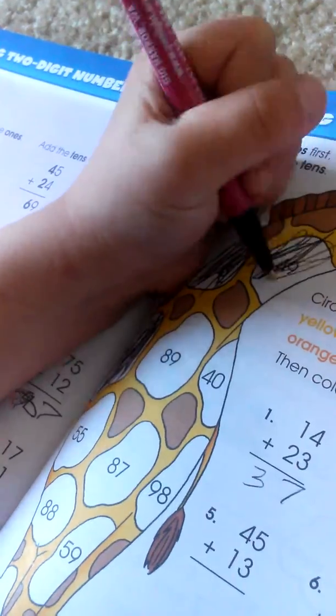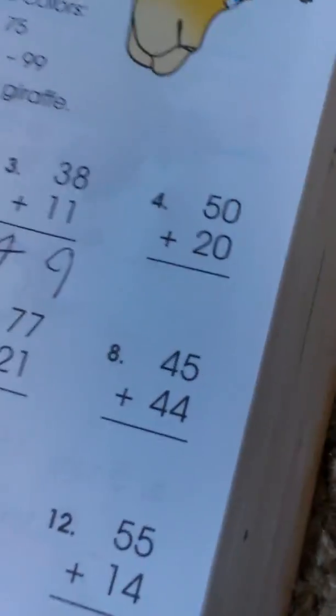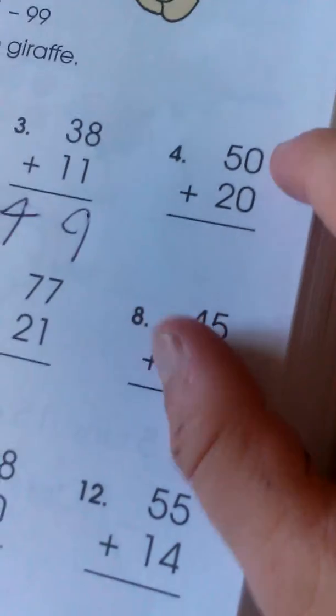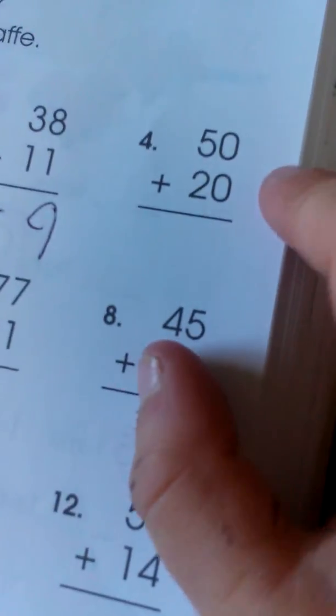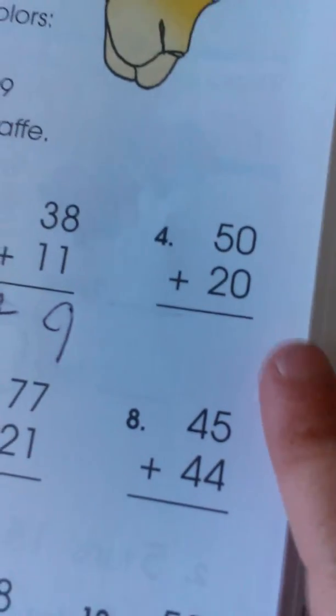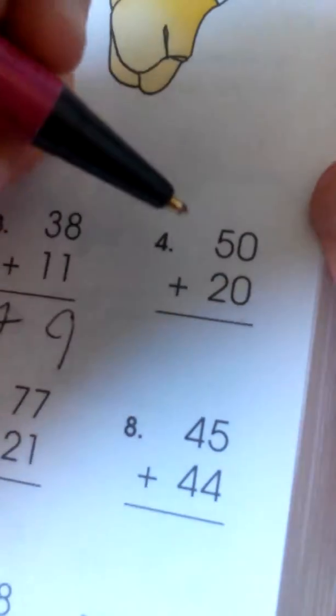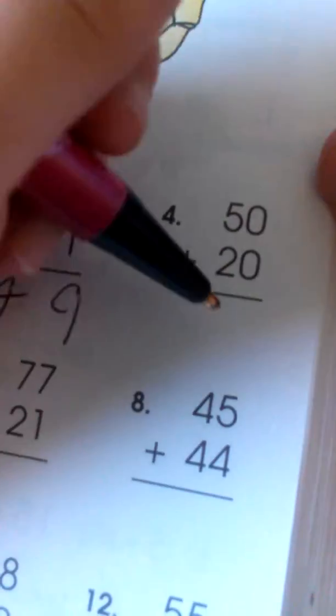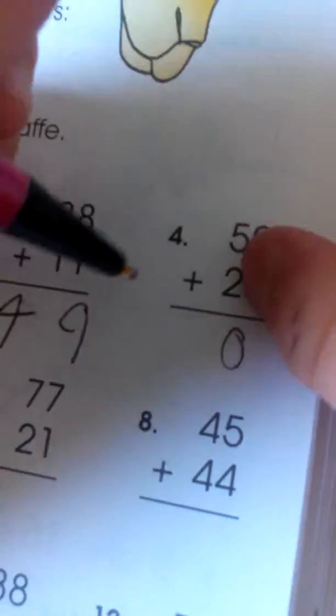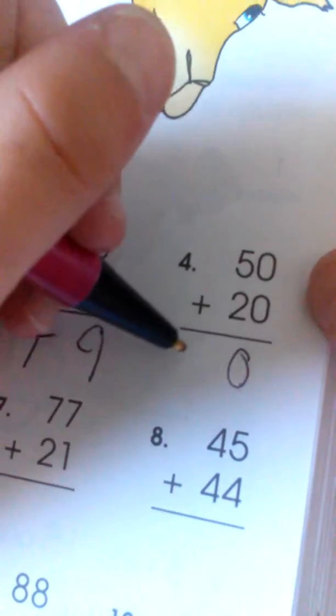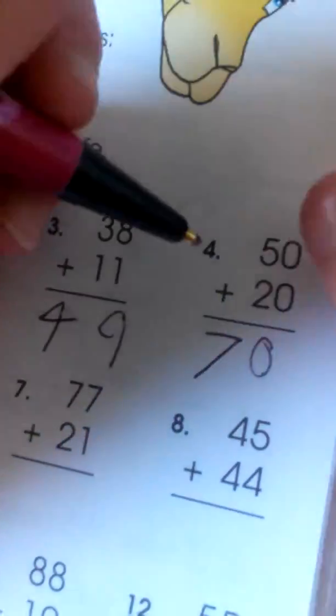I'll do 50 plus 20. I've done something plus 20 but this one is kind of the same as that one. 50 plus 20. 0 plus 0 is 0 and 5 plus 2 is 7, so the answer is 70. Let's look for it.